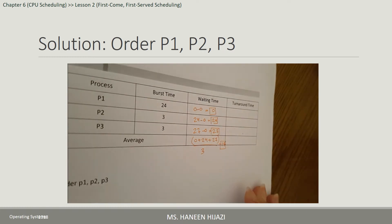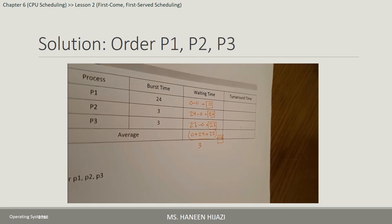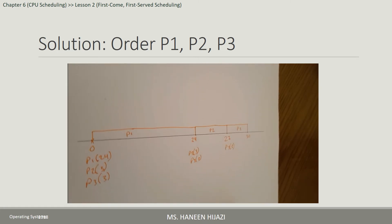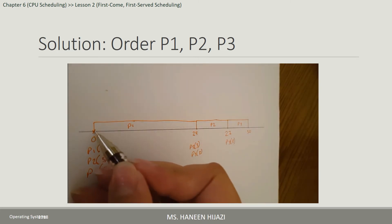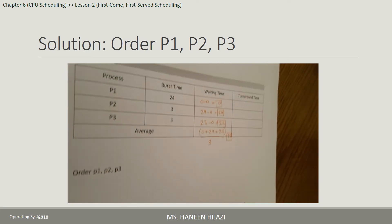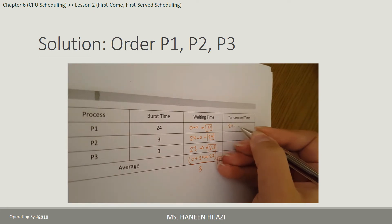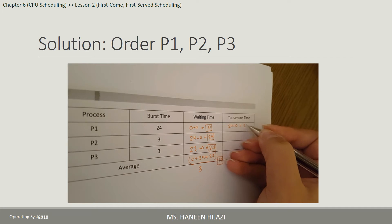هذا الـ Average Waiting Time. هلأ الـ Average Turn Around Time — بدي أحسب الـ turn around time لكل بروسس. الـ turn around time لكل بروسس هو عبارة عن الوقت اللي بتقضيه الـ process في السيستم من أول ما بتفوت لحد ما بتخلص وبتطلع. P1 أمتة فاتت؟ at time 0. أمتة خلصت P1؟ at time 24. فبدو يكون الـ turn around تبعها 24 - 0 = 24.